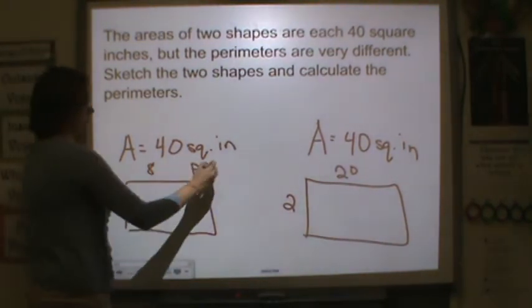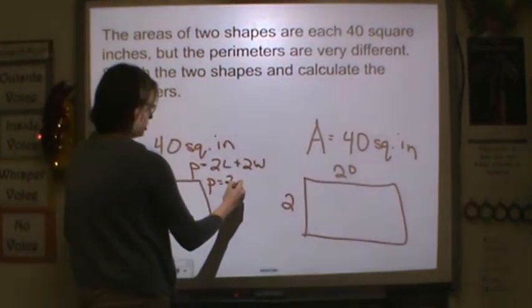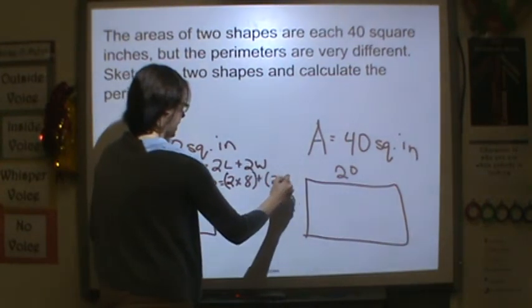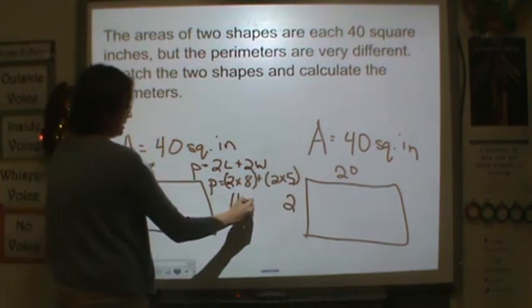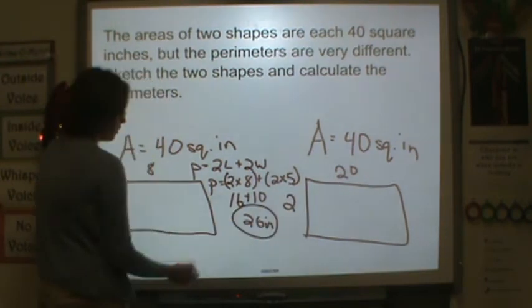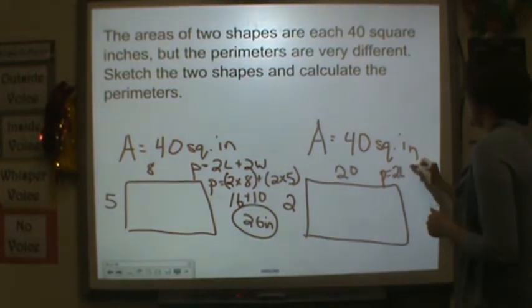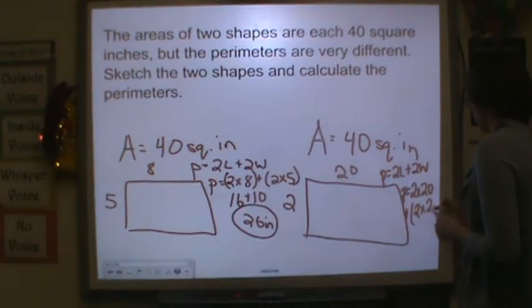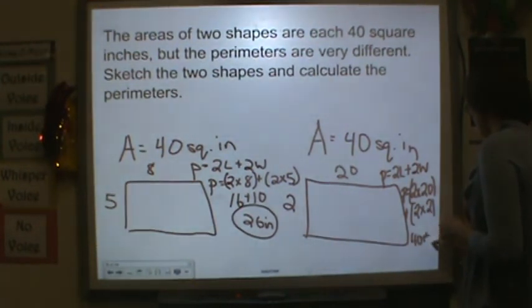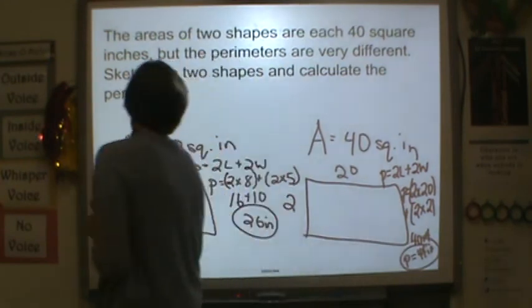Now we need to find the perimeters. Remember, perimeter is 2L plus 2W. So perimeter is equal to 2 times 8 plus 2 times 5. 2 times 8 is 16 plus 10. That's equal to 26 inches. So that's one perimeter. This one perimeter is equal to 2L plus 2W. My L is 20, so perimeter is equal to 2 times 20 plus 2 times 2. 2 times 20 is 40. 2 times 2 is 4. So the perimeter here is 44 inches.